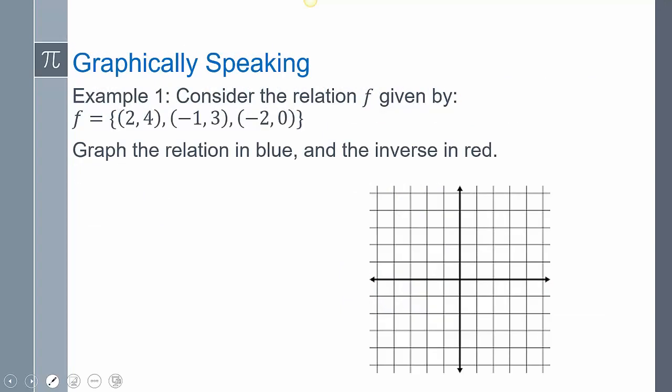Now let's take a look at a graph. Consider this relation of f. This is a special type of relation, anything where x and y's together are relating two things together. But I'm just calling this relation f. If I wanted to graph it, I would just plot these given points here. So here's the 2, 4, negative 1, 3, and negative 2, 0. So I have those three dots.